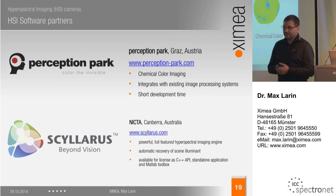There are two companies we are cooperating with specifically in hyperspectral imaging and data processing. The first is Perception Park, located in Graz, Austria. The focus of their software is chemical color imaging — knowing the spectrum for particular substances, we can see what chemicals are present in the scene. It integrates with the existing processing pipeline: instead of delivering a hyperspectral cube that no one can easily process, the output is 2D images with pseudo-color or substance indexes. This substantially reduces development time to get your hyperspectral system up and running.